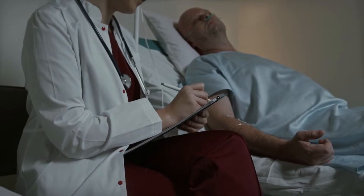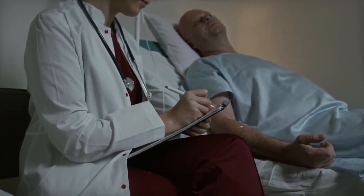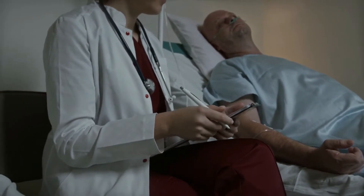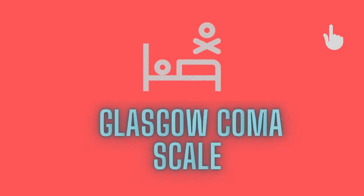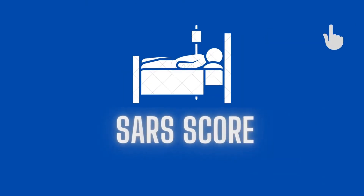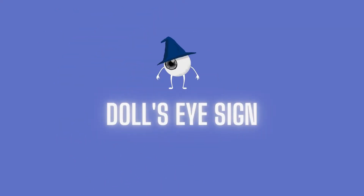In the critical care unit, assessment of the neurological status of a patient is extremely important. In this neuroassessment series, we have explained the Glasgow Coma Scale or GCS, sepsis scale or SARS, and various other neural signs and reflexes. Now we will look at the Doll's eye sign in patients with altered consciousness.